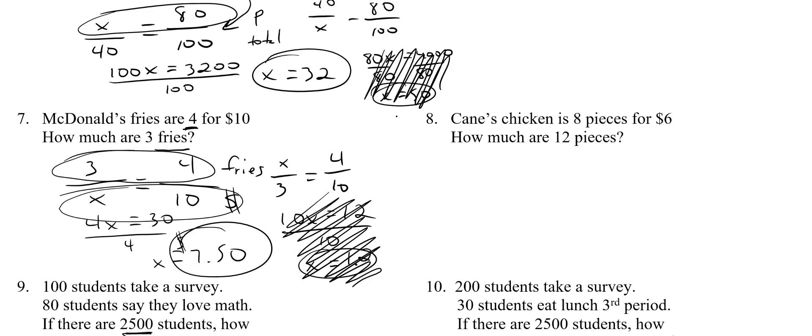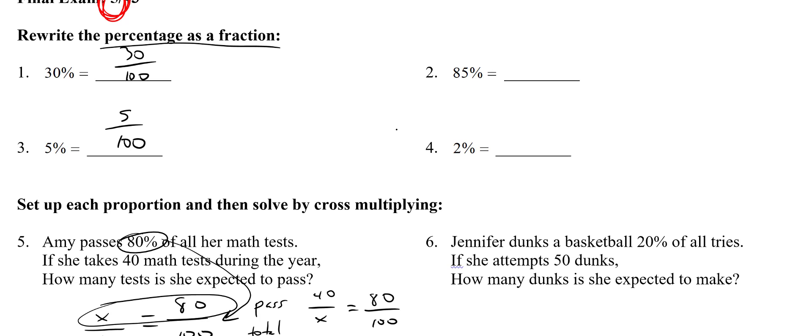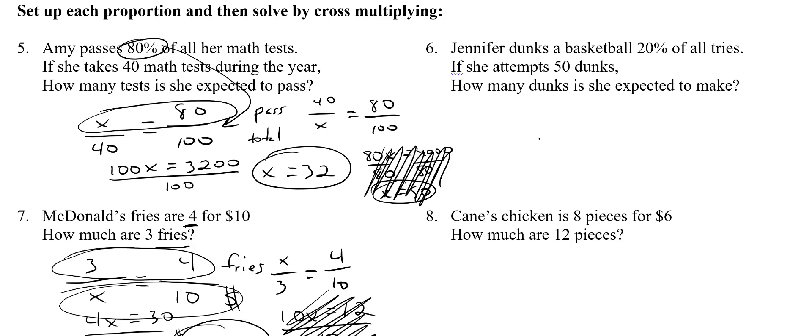So let's do the right-hand side now. I'll do it kind of quickly. So 85% is just 85 over 100. Pretty easy. 2% is 2 out of 100. That's super easy. Jennifer dunks a basketball 20% of all tries. So as soon as I see that 20%, it's 20 over 100. If she attempts 50 dunks, how many is she expected to make? Remember that she's trying 50 times, and I want to know how many is she going to make? Because she makes 20%, so 20 out of 100. Make sure you set up correctly. Otherwise your answer is going to be wrong. So we get, cross multiply, 100x equals 1000 divided by 100. So x equals 10. That's how many dunks she's expected to make.